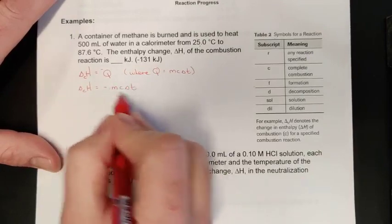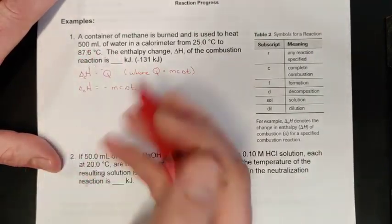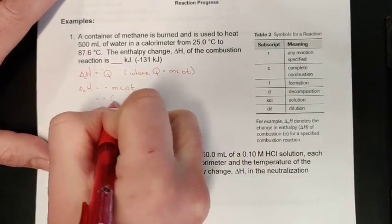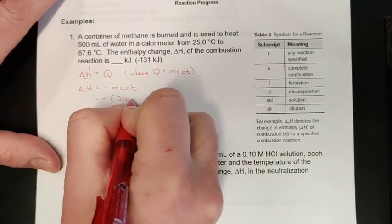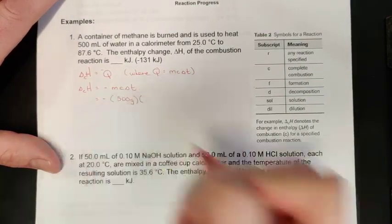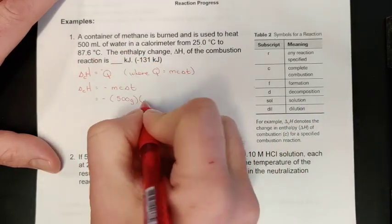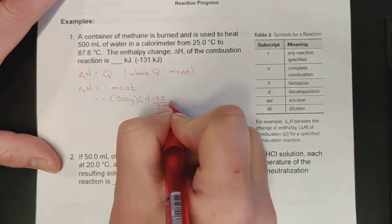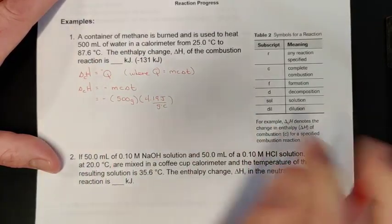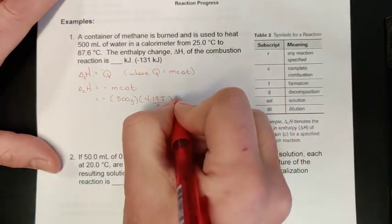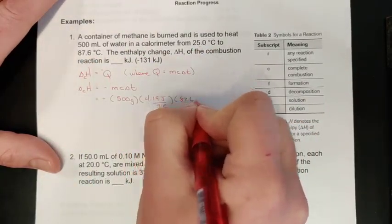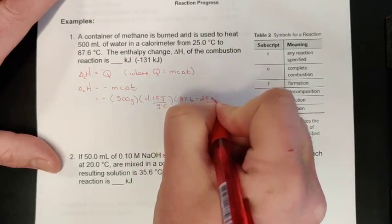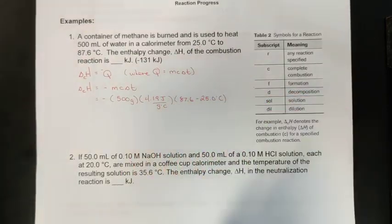I just need to know what's heating up or cooling down. From the question I can see that it is 500 grams of water. Because it's water, it has its 4.19 joules per gram degree Celsius value for specific heat capacity.